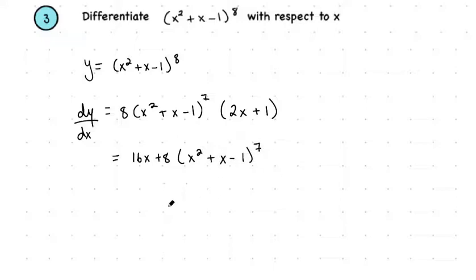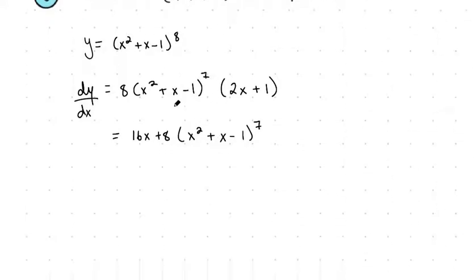So that's one way in which we can think about our differentiation when it comes to brackets. Another way we could think about it is by using u substitution. So what we had was y equals x squared plus x minus one to the power of eight.